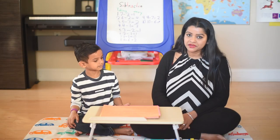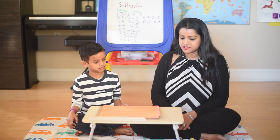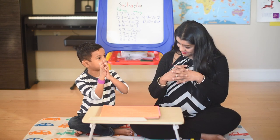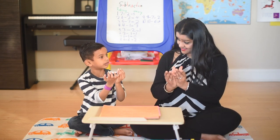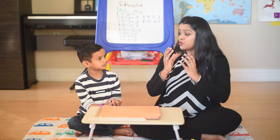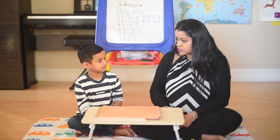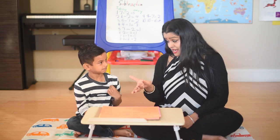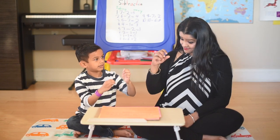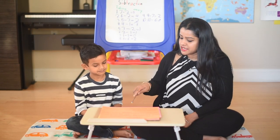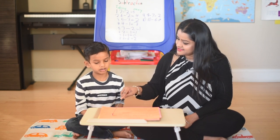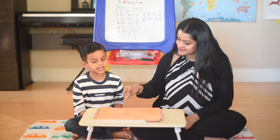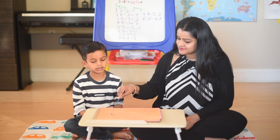Let's do a quick recap with some of the key concepts. What is addition? Addition is putting things together and finding the total number or the sum. And the answer to the addition problem is called the sum. In subtraction, we take things away. And subtraction tells you how many are left, how many are taken away, and how many more or less.